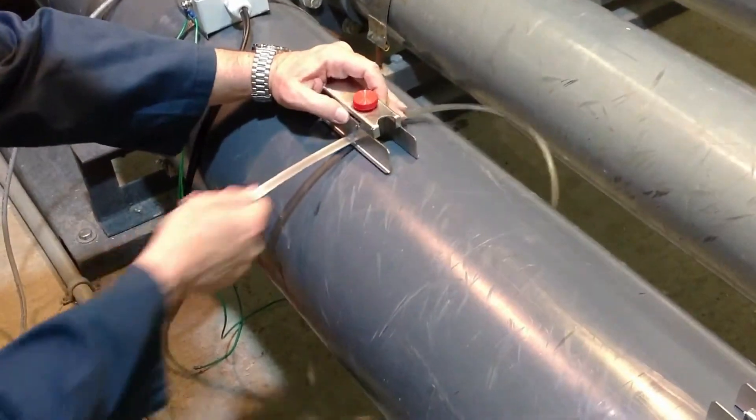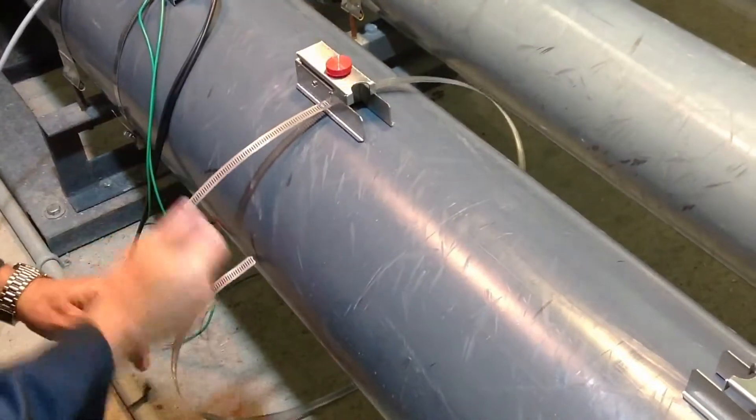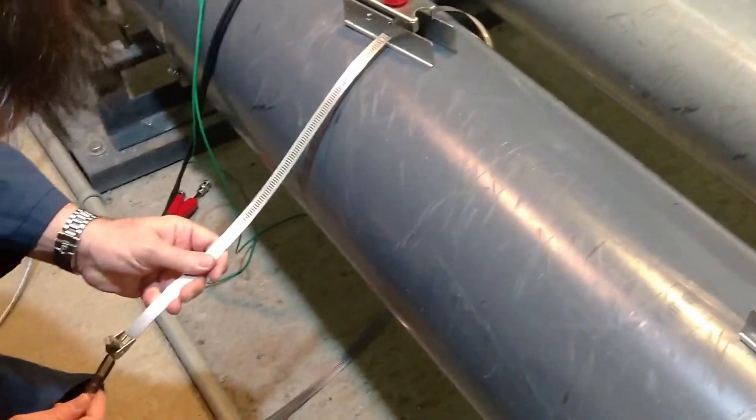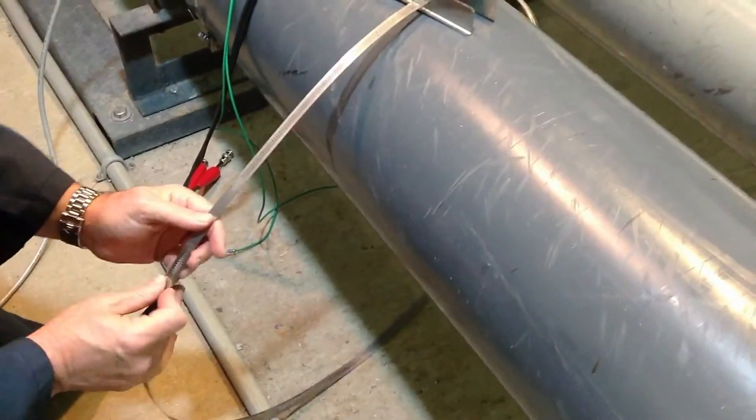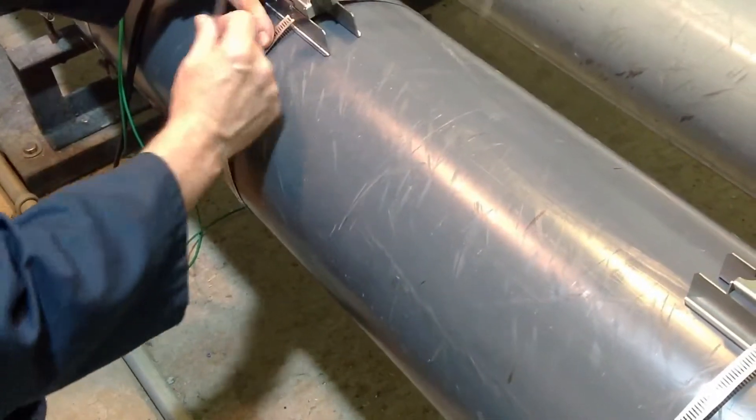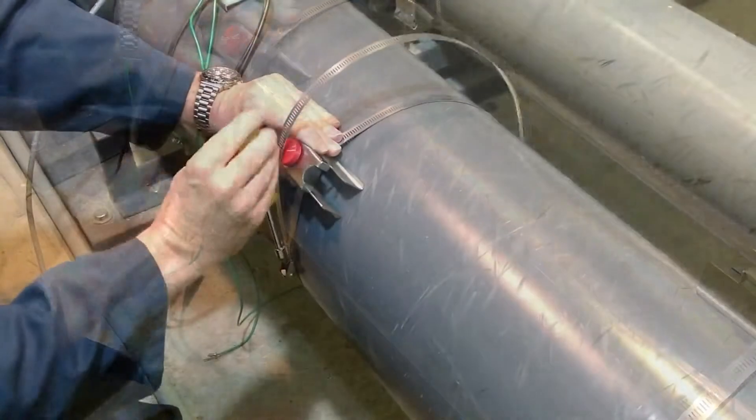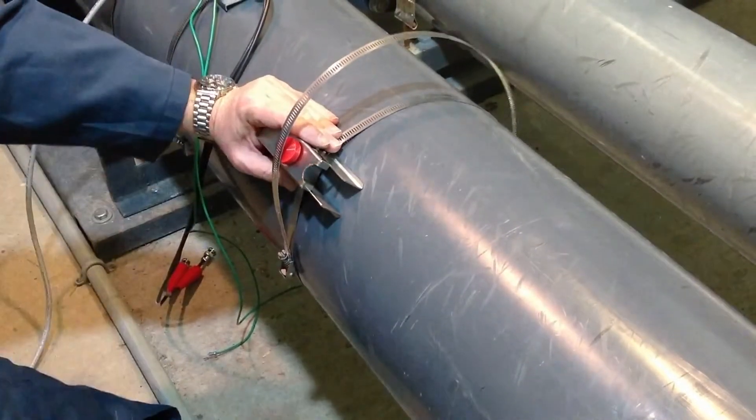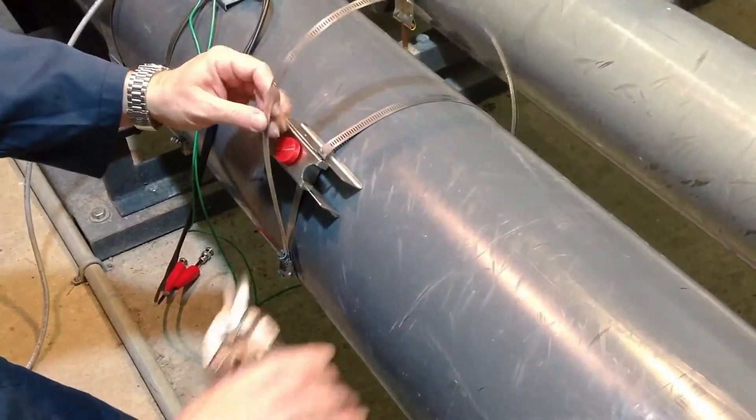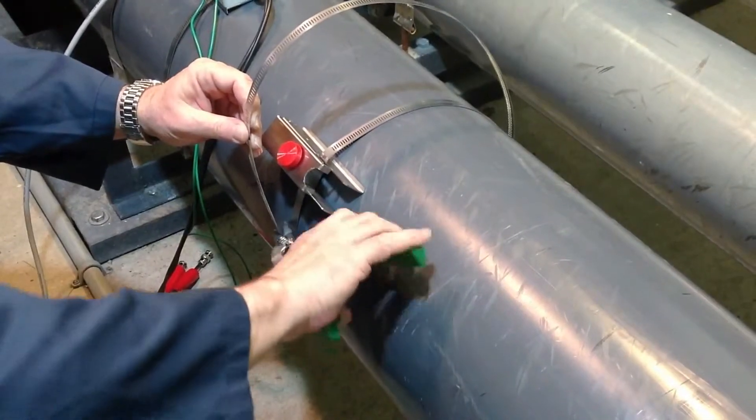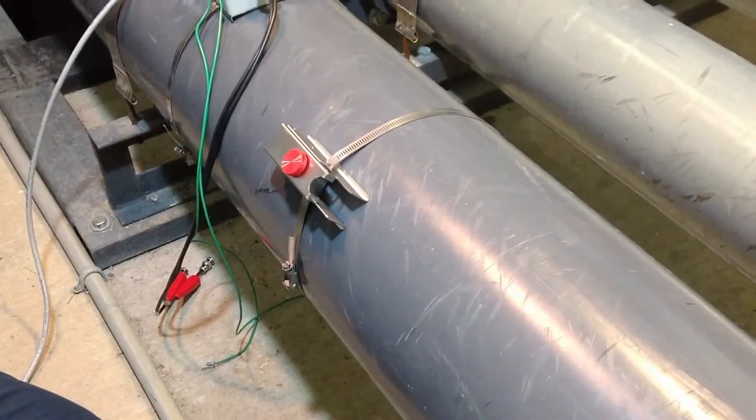We begin by inserting adjustable clamps through each of the two mounting brackets. The clamp is mounted on the pipe and secured in place by tightening the adjustment screw. Any excess length can be trimmed and discarded.